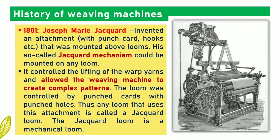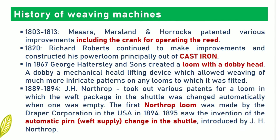In 1801, Joseph M. Jacquard invented an attachment that was mounted above looms. His so-called Jacquard mechanism could be mounted on any loom. It controlled the lifting of the warp ends and allowed the weaving machine to create complex patterns. The loom was controlled by punch cards with punch holes. In 1803 to 1813, Messers Marsland and Horrocks patented various improvements including the crank for operating the reed.